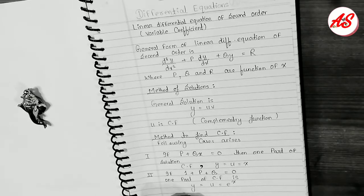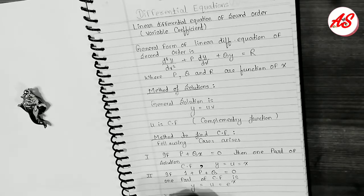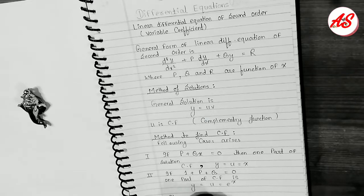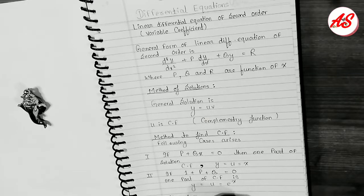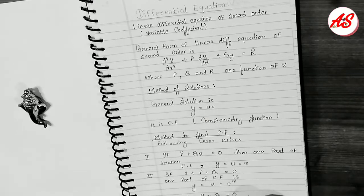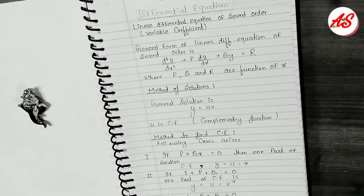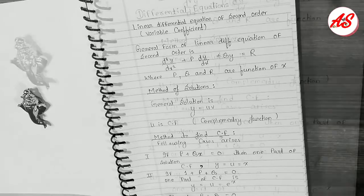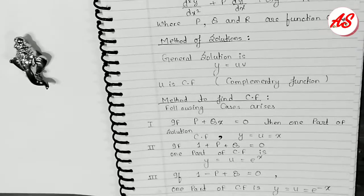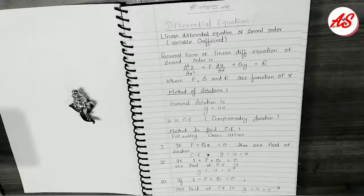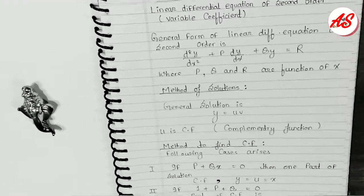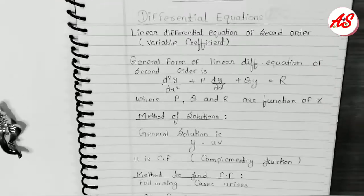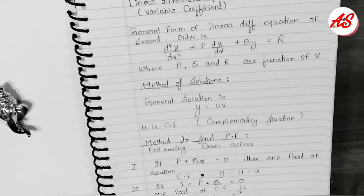then one part of the CF is y = u = e^(−x). Now we move to the fourth method.